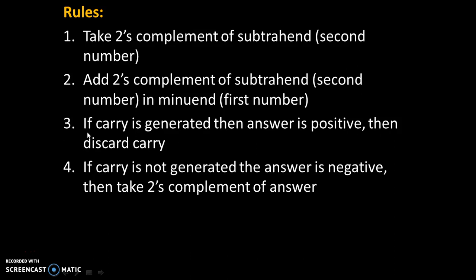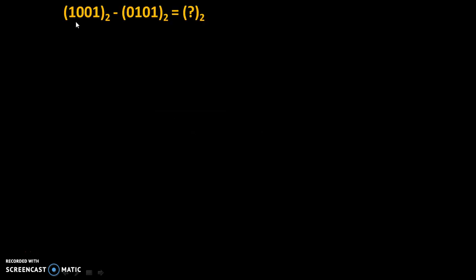There are only two cases: if carry is generated and if carry is not generated. Let's see both of these cases. First case is if carry is generated. The problem is 1001 base 2 minus 0101 base 2 equals question mark base 2. Base 2 means these numbers are in binary format. We will subtract the second binary number from the first number. According to the rule, we will start with the second number, which is 0101.